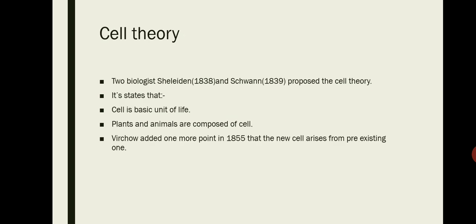Now, next is cell theory. Cell theory was given by two biologists, Schleiden and Schwann. And what are the postulates, what are the important points of the cell theory? Two important points are there: cell is the basic unit of life, and all plants and animals are composed of cells. Virchow, a scientist, added one more point in 1855, that new cells arise from the pre-existing ones. So this is all about the cell theory.